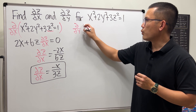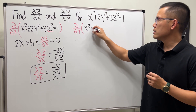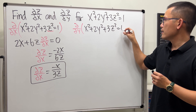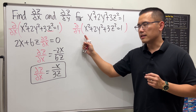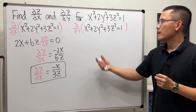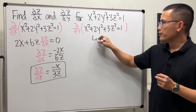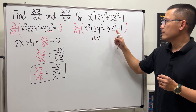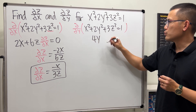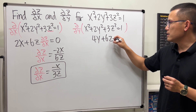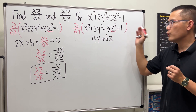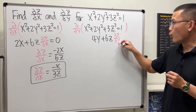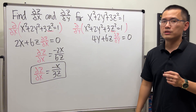Now, partial with respect to y of this equation. Here, x is a constant in the y world. The derivative of y² will give us 4y to the first power. Treat z as a function of y, so bring the power to the front and minus 1. We get plus 6z, and then multiply by the derivative of z with respect to y, so partial z with respect to y. And that gives us the derivative of 1, which is 0.